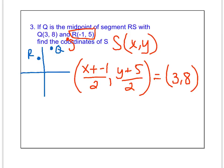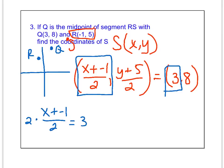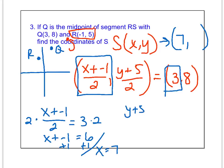Now I'm going to break that into two different equations. Starting with the X value, X plus negative 1 over 2 has to equal 3. I'm going to solve that algebraically. Multiply both sides by 2, so X plus negative 1 equals 6. If I add 1 to both sides, I get X equals 7. So I now know the X value of point S has to be 7.